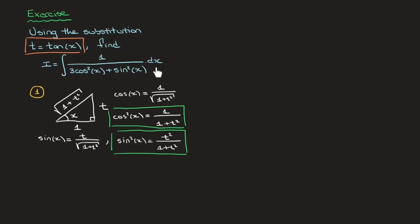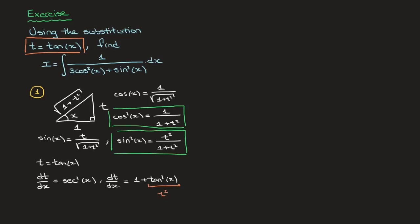Now we need to rewrite the dx in terms of t. We use the fact that t equals tan of x. Its derivative dt/dx is therefore equal to sec squared of x, or equivalently dt/dx equals 1 plus tan squared of x. For rewriting our integral in terms of t, we use the second result. Since t equals tan of x, 1 plus tan squared of x is the same as 1 plus t squared. So rearranging, dx equals dt over 1 plus t squared.